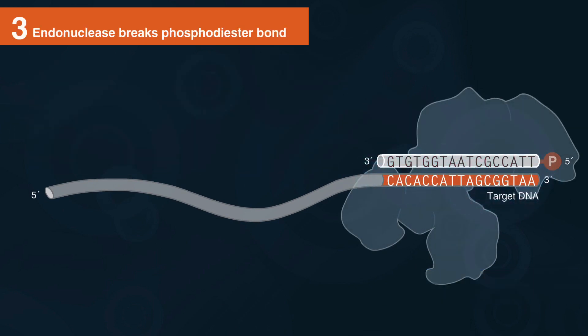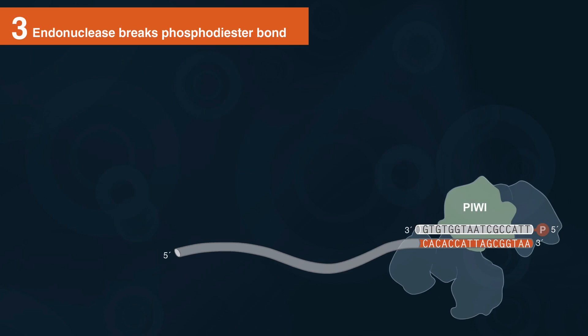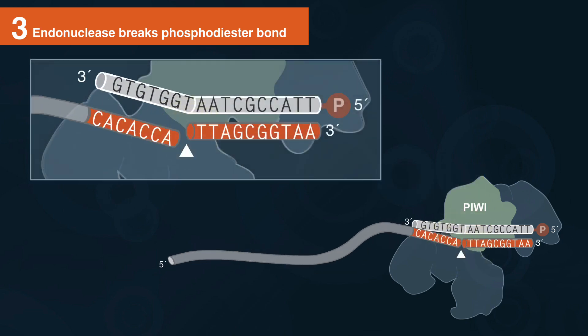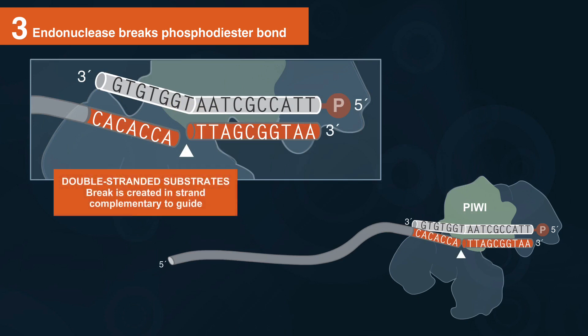This activates prokaryotic argonaut endonuclease activity in the PIWI domain, which contains a metal-dependent RNase H-like active site. A break is created in the phosphodiester backbone of the complementary substrate nucleic acid. In the case of double-stranded substrates, a break is only created in the strand which is complementary to the guide nucleic acid.